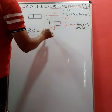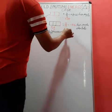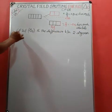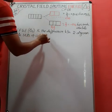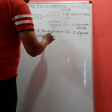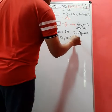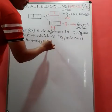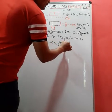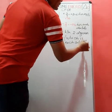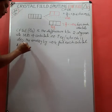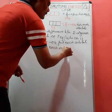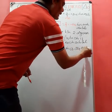The CFSE is the difference between two degenerate sets of orbitals. The first set is t2g, which decreases energy by minus 0.4 delta-oh for each orbital. The second set is eg, which consists of two orbitals, and each one increases the energy by plus 0.6 delta-oh.